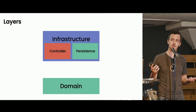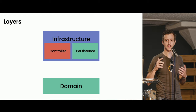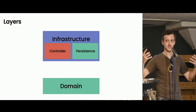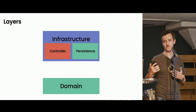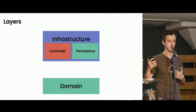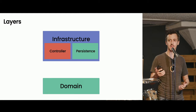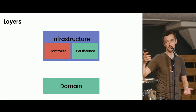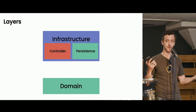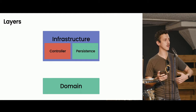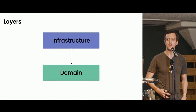The infrastructure layer might not seem obvious — what do persistence and controllers have in common? The thing they share is they both deal with things external to the system. Controllers deal with HTTP requests; persistence deals with communicating with the database. These are also things likely to change. If we want to switch from MySQL to Postgres we can do that without affecting our domain layer at all. Or if instead of HTTP requests we want to call code from a CLI, we can do that.